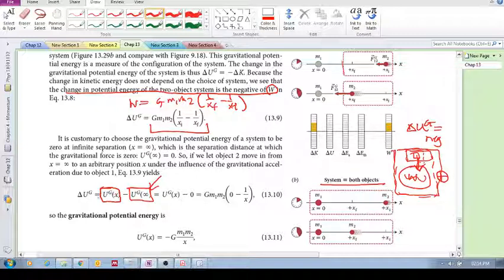Then, the final gravitational potential energy will be UG of X, where X is that distance there. So, the initial is infinitely far away, and then the final is some finite distance away, where there is actually an appreciable force between these two objects.